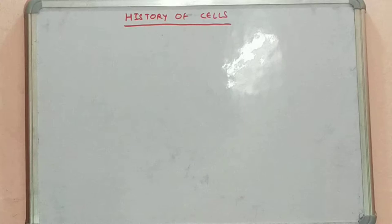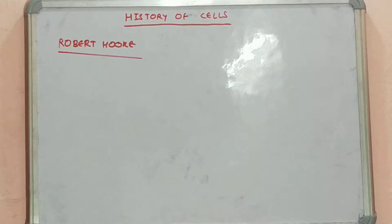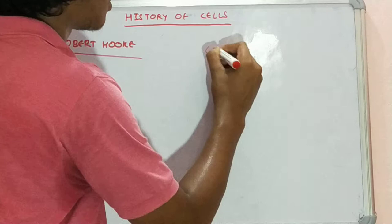Starting with the history of cells, the first person to mention is Robert Hooke. He was the first person who said that all living beings are composed of cells. He was an English naturalist and architect who coined the word 'cell' to describe what he saw while viewing tree bark from a cork oak. He used a two-lens microscope and began the concept of cell theory.